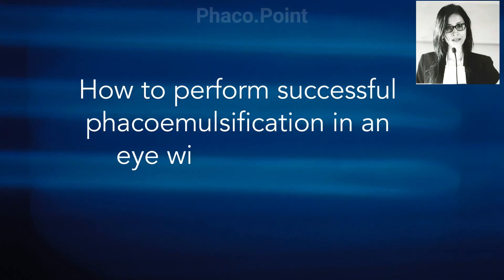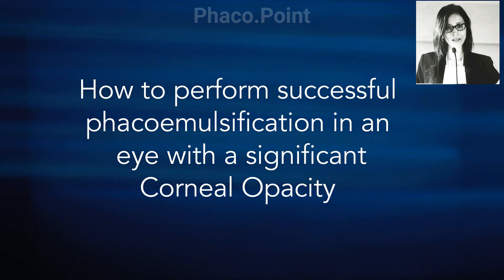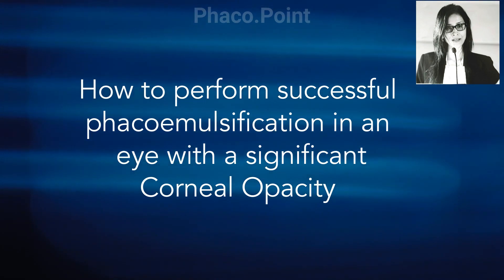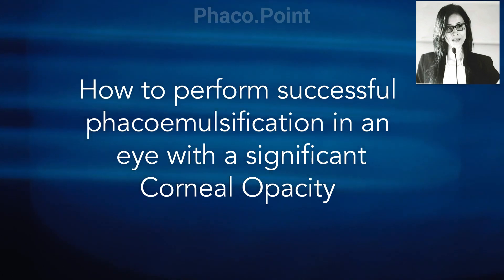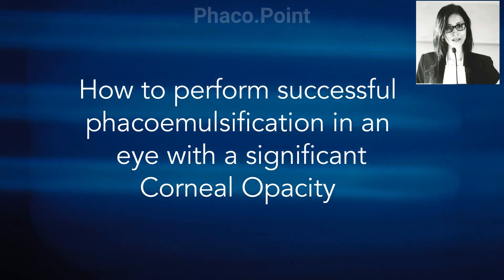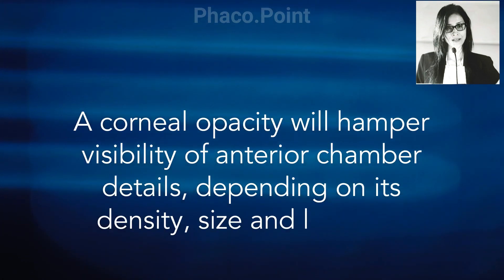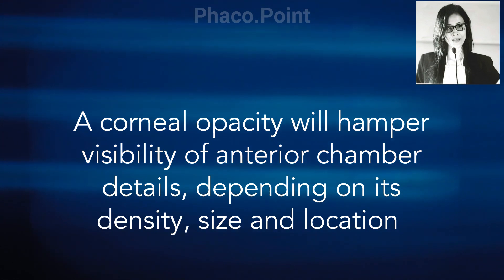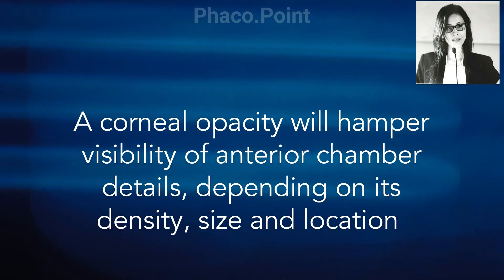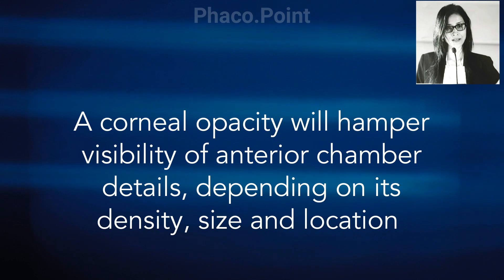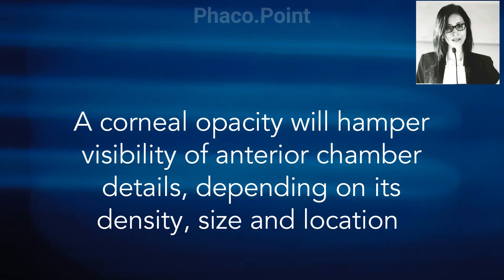In this video I'd like to share my understanding of the limitations that come up when performing phacoemulsification in a patient with an associated corneal opacity. In order to perform a safe and uneventful phacoemulsification we need adequate visibility. Once you have a corneal opacity you are likely to have some limitations, and depending on its size and location it's likely to cause significant visual obscurations during the procedure.